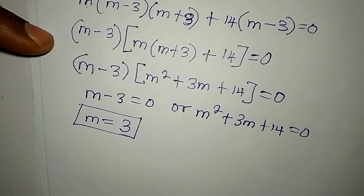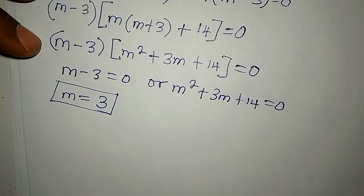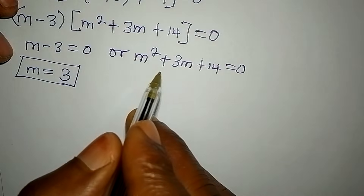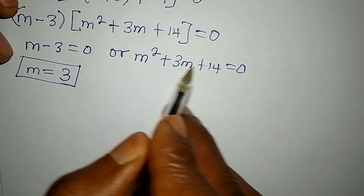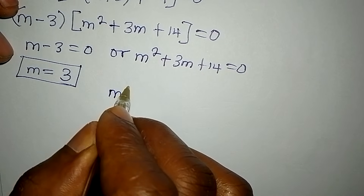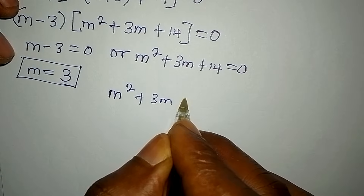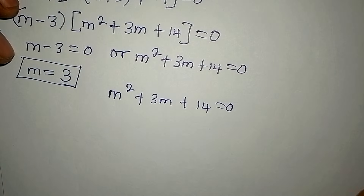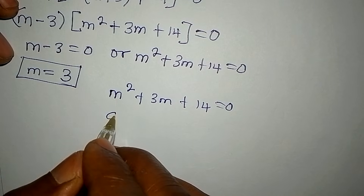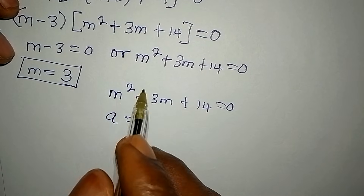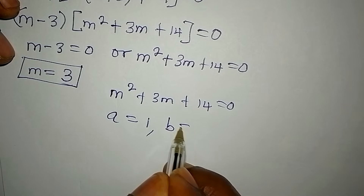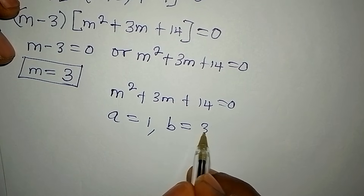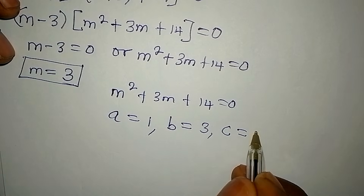We are looking for three solutions, and we will get the other two from m² + 3m + 14 = 0 using the formula method. Here, a is the coefficient of m², which is 1; b is the coefficient of m, which is 3; and c is the constant, which is 14.